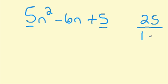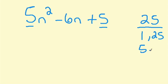Factor pairs of 25 are 1 and 25. It's not an even number so 2 doesn't work, 3 doesn't work, 4 won't work. 5 times 5 is 25. And that's it.